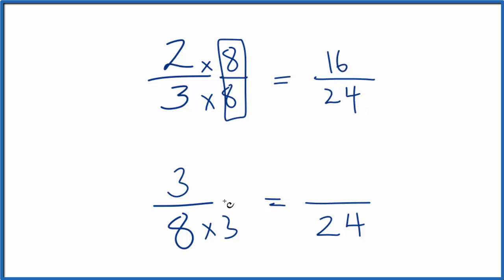They're really the same number. Down here, we're going to multiply by 3 over 3. That gives us 9 over 24.